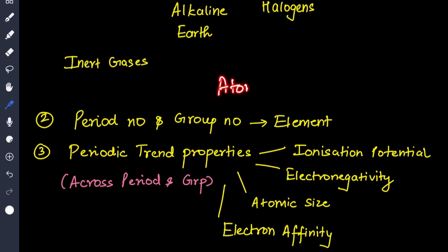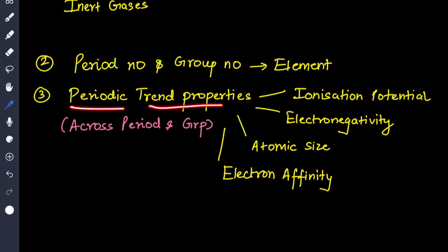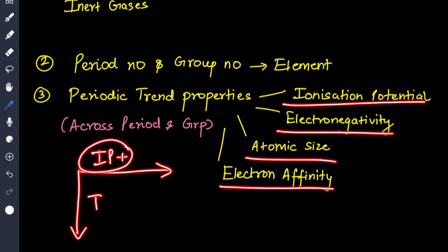Second, they will be giving you the atomic number of an element. You have to write the electronic configuration and then write the period number and the group number to which the element belongs. Periodic trend properties are asked every year, be it the ionization potential, electronegativity, atomic size, or electron affinity. For example, across a period the IP increases and down the group it decreases.